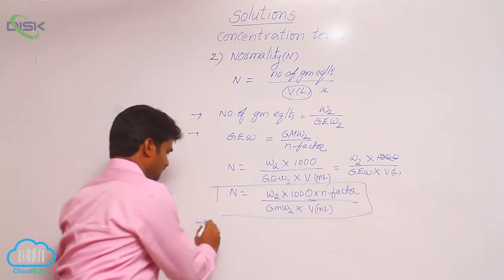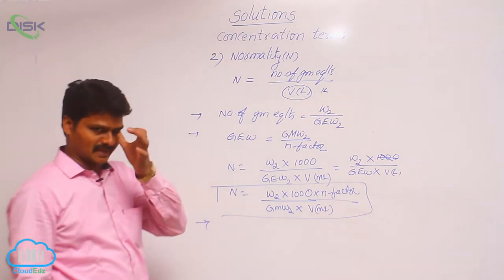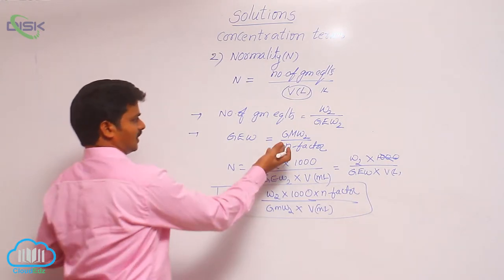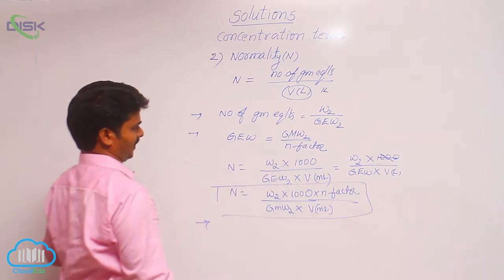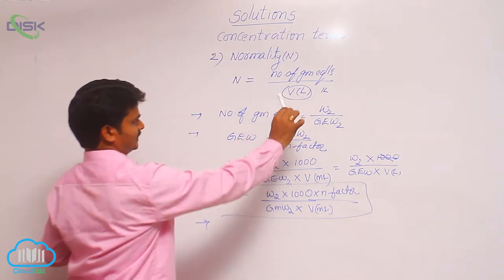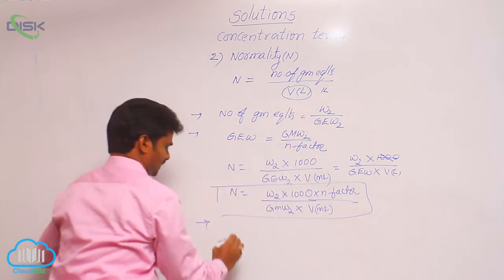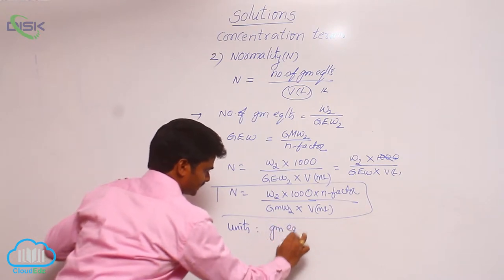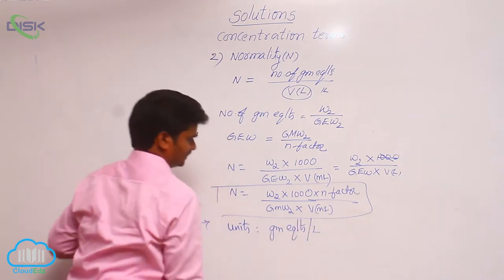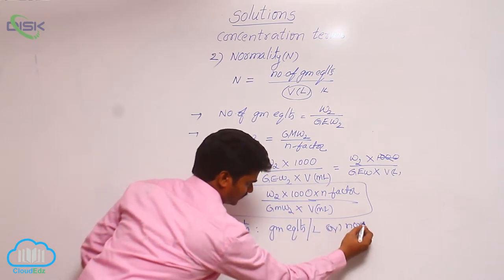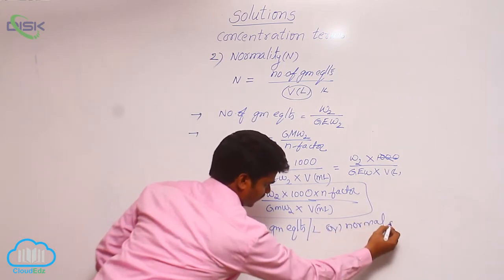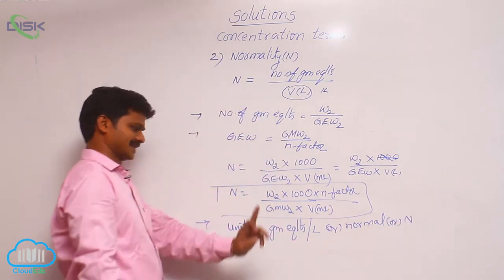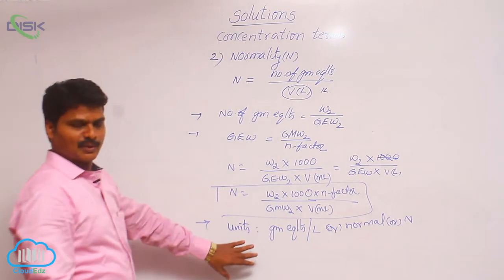Let us see the units and temperature dependence of normality. Units are derived from the formula. Since normality is number of gram equivalents per volume, the units of normality are gram equivalents per liter. This is also called 'normal,' denoted by capital N, meaning gram equivalents per liter.